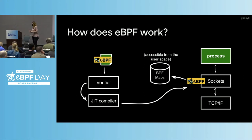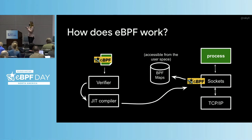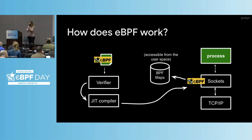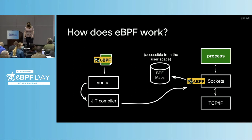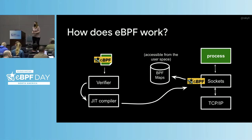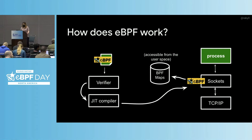This is how eBPF works. You write eBPF programs, you send them to a verifier and a JIT compiler, and then you can attach them to certain places. In this example, I'm attaching to the sockets to read the network data. There is this eBPF map type of data structure where you can collect the events coming from the sockets, and eBPF event maps are accessible by user space programs. Your user space program, such as an agent, can come in and read it, filter, and do all the post-processing to the event stream.